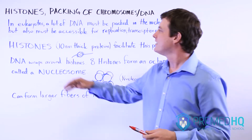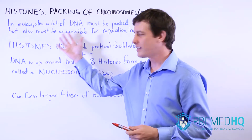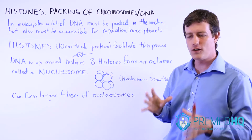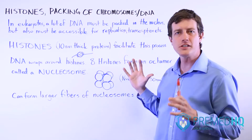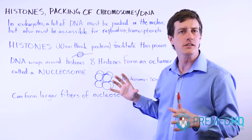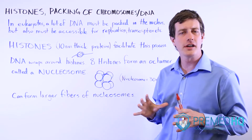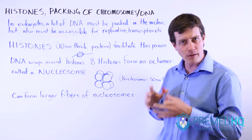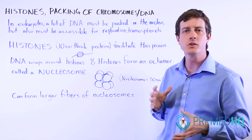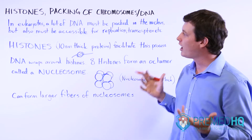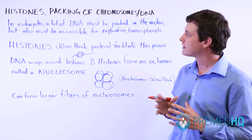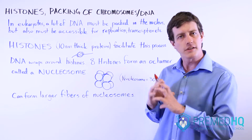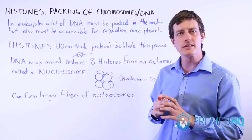Eukaryotic cells present an interesting conundrum: all of the genetic material in the eukaryotic cell has to fit within a small membrane-bound nucleus. This presents a problem because there's so much DNA that needs to fit into a small place.